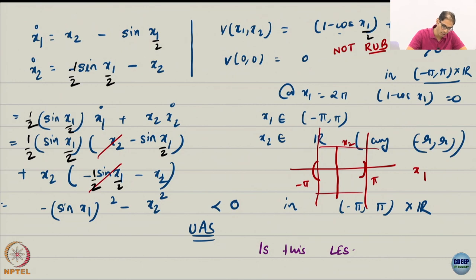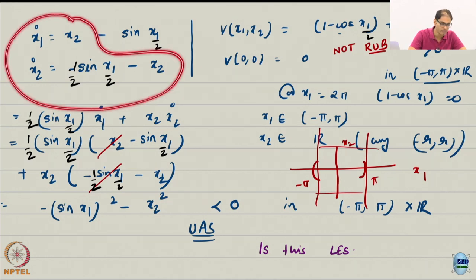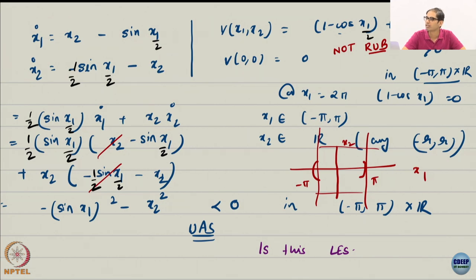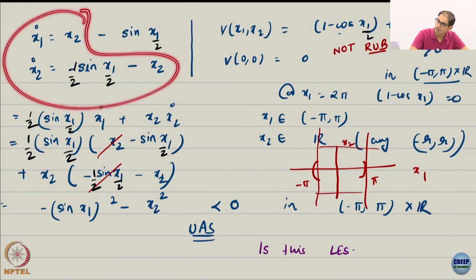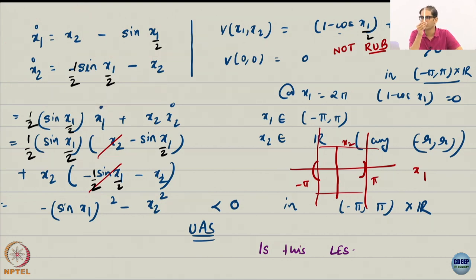So if it so happened that your harmonic oscillator had x1 by 2 instead of x1, then this pi thing, so the pi thing will not be an equilibrium at all, right? If you look at the equilibrium of this guy. What is the equilibrium? x2 equal to 0 is an equilibrium and sin x1 by 2 is an equilibrium. Has to be, sin x1 by 2 equal to 0 is an equilibrium. So either x1 has to be 0 or x1 has to be 2 pi, which is the same as 0.